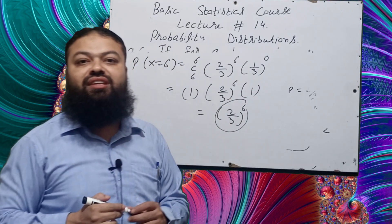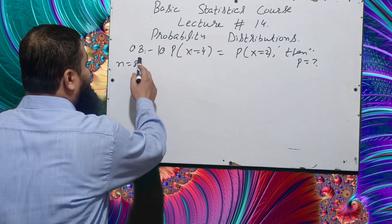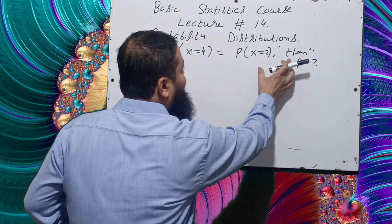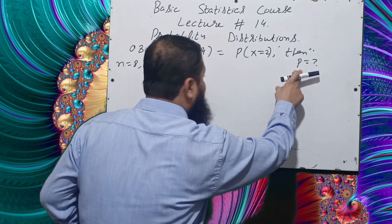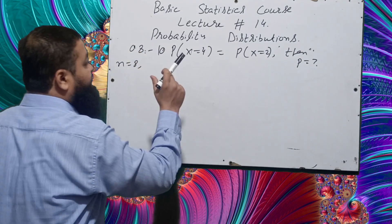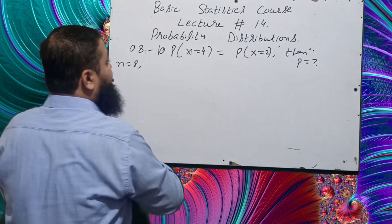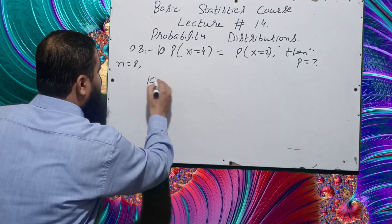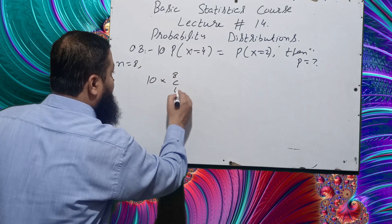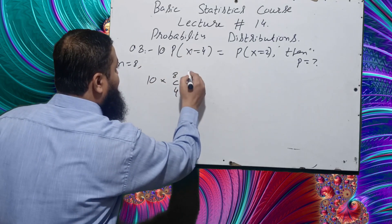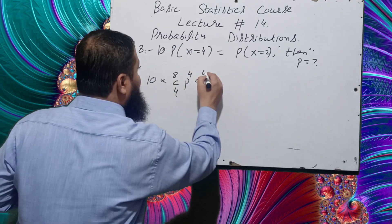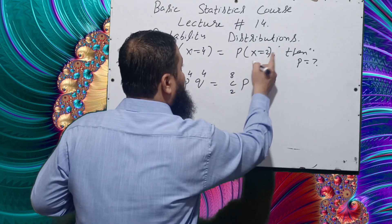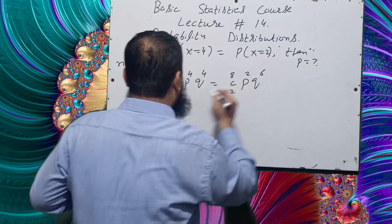Question number eight: if 10 × P(X = 4) = P(X = 2), then what is the probability of success when n = 8 in the binomial distribution? We write: 10 × 8C4 × P^4 × Q^4 = 8C2 × P^2 × Q^6. Expanding: 10 × (8! / (4! × 4!)) × P^4 × Q^4 = (8! / (2! × 6!)) × P^2 × Q^6.